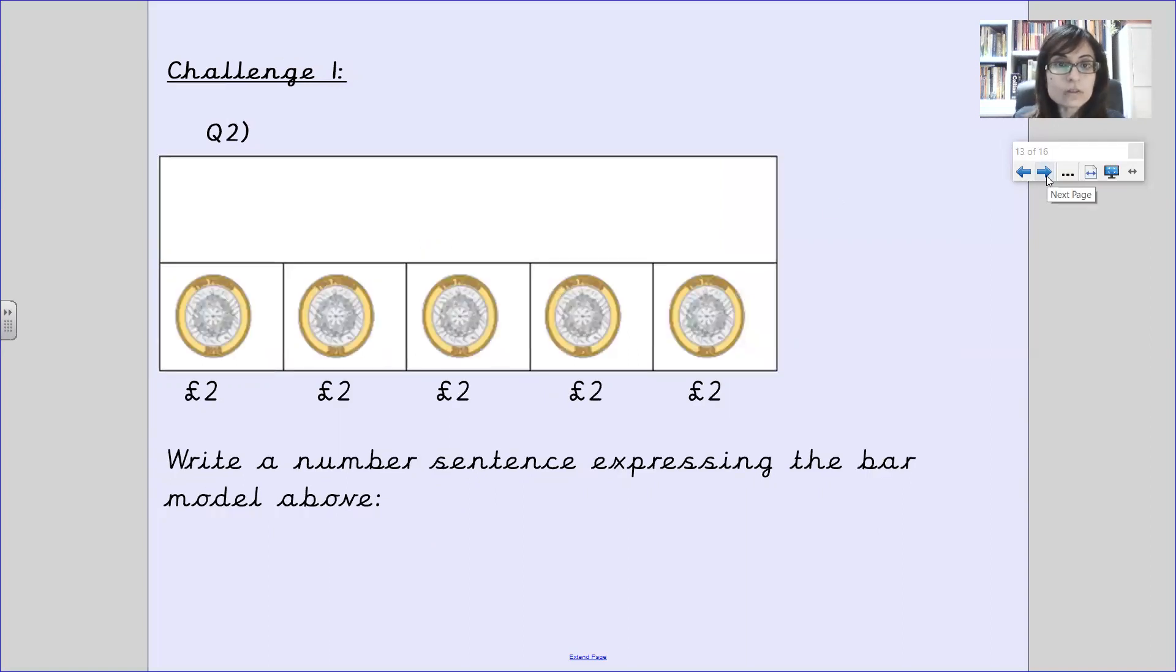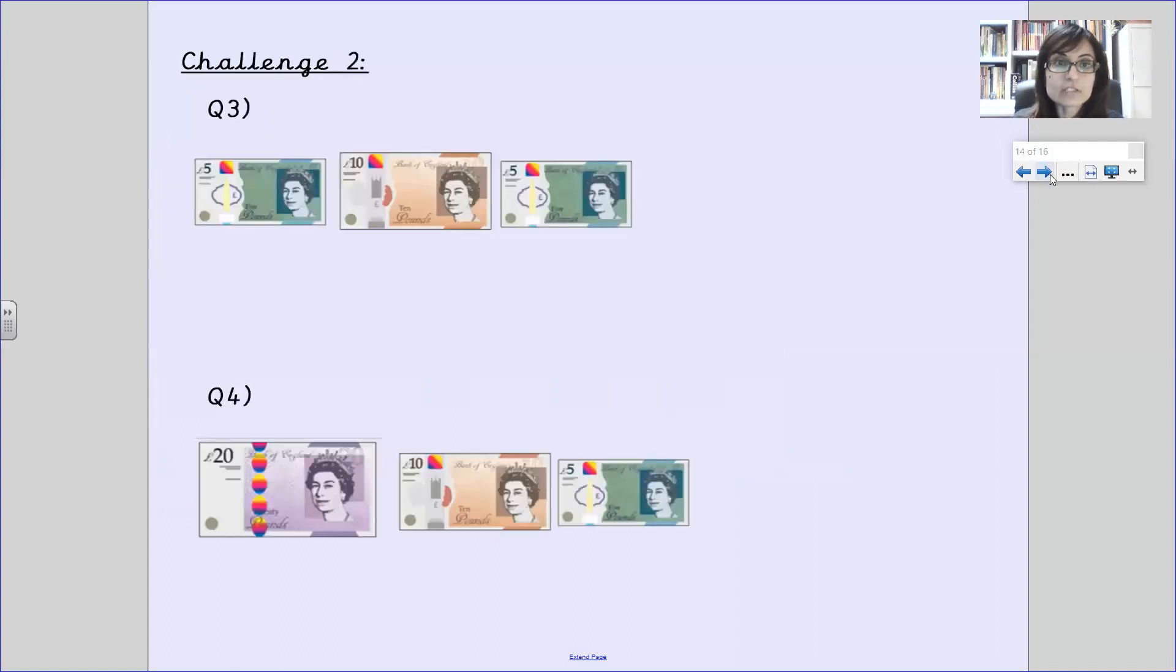Challenge one, question two. This time you've got two pound coins. Can you write a number sentence for this amount? Remember, you can always pause the video, take your time and then write the number sentence. Challenge two. You've got some notes. Remember to write the number sentence and the value of each question.